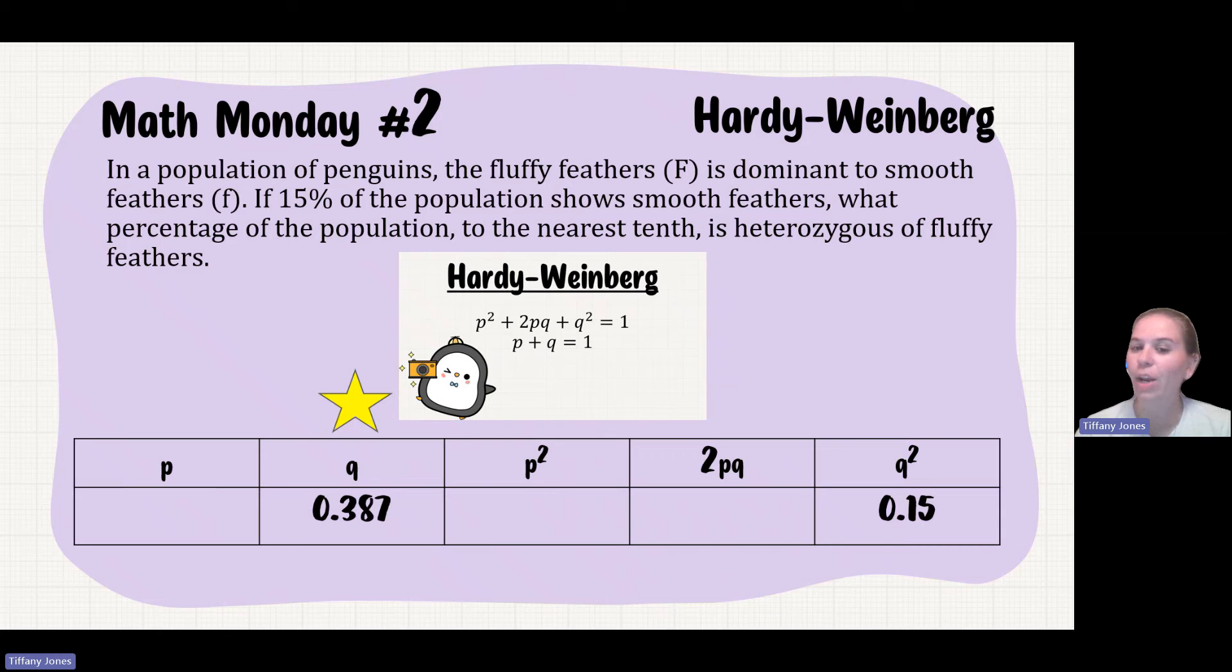Well, based on my formula, I know that P + Q = 1. So if I know Q, I say 1 minus my Q will give me my P. So my P is going to be 0.613. If I know P, now I can solve for P². I'll just square the value that I got for P. So 0.613² is going to give me 0.376.